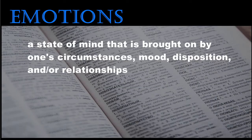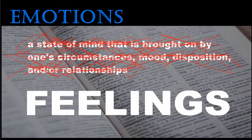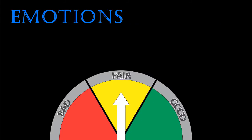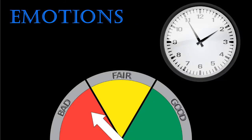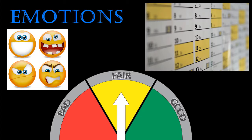Emotion is defined as a state of mind that is brought on by one's circumstances, mood, disposition, and/or relationships. More simply put, emotions are feelings. Emotions can change from moment to moment. In fact, in any given day, a person can experience a drastic range of different emotions.